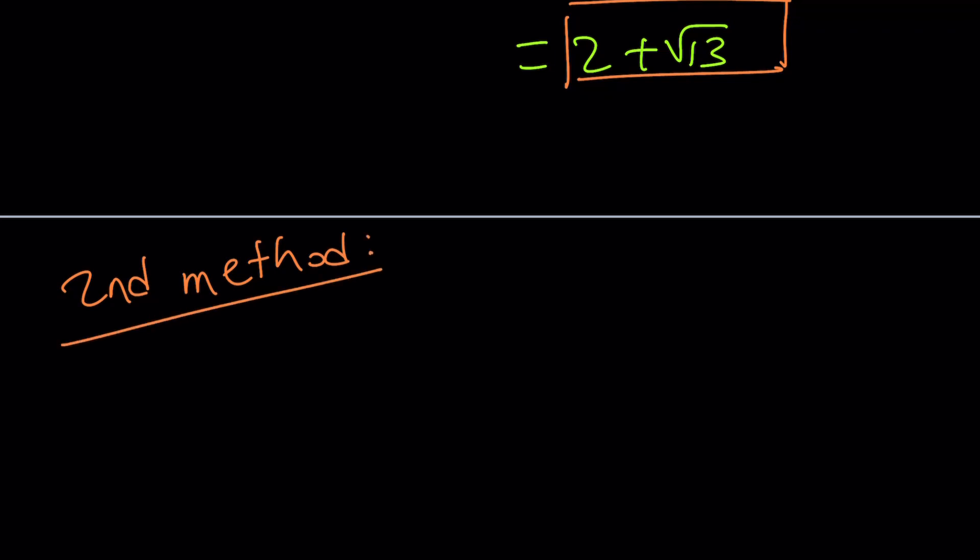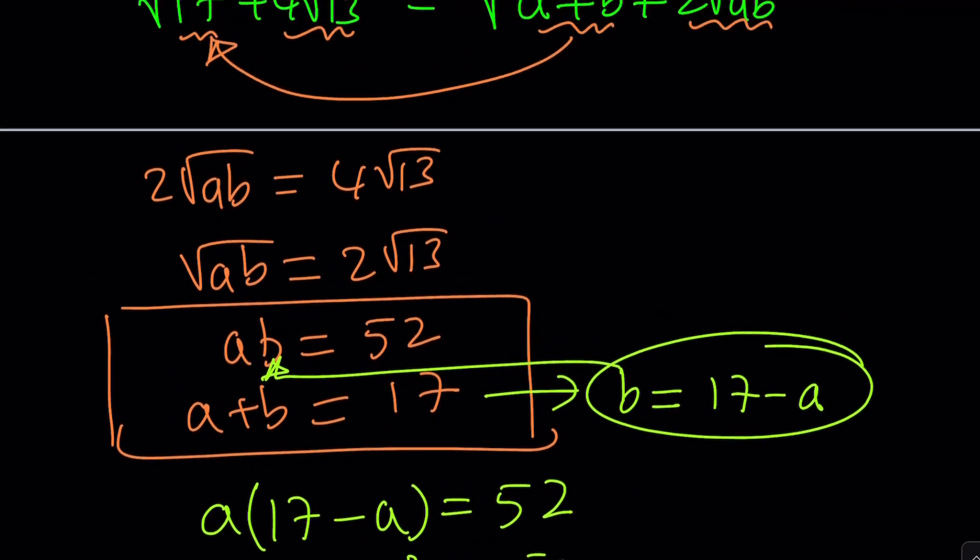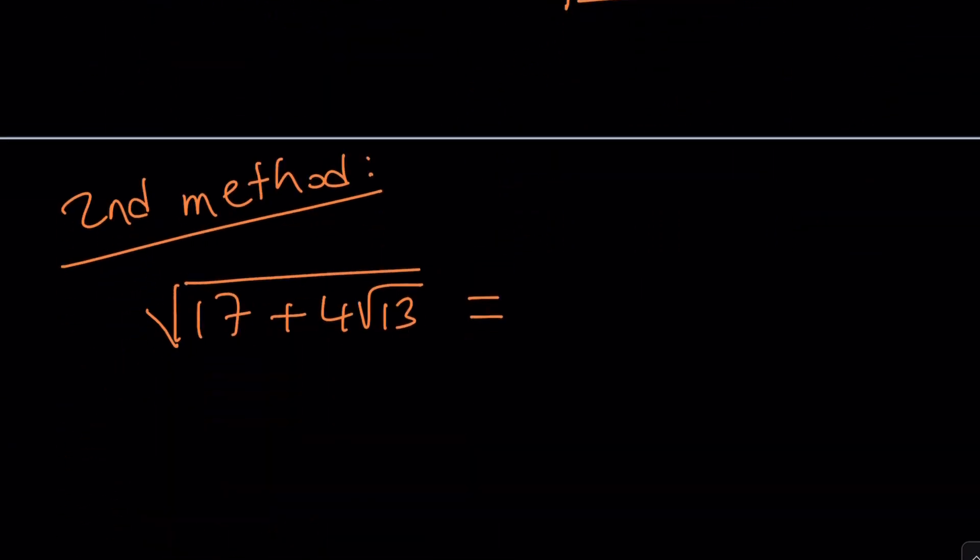So the second method is very similar to the first one, kind of similar in the sense that we're going to set this equal to something. Now, I noticed that the expression inside the innermost radical is 13, so I'm just going to assume that this can be written as x plus y root 13. Now, why am I assuming that? Well, this is not always going to work, because if you have square root of 6, that's a different story. But since 13 is prime, this should work well.